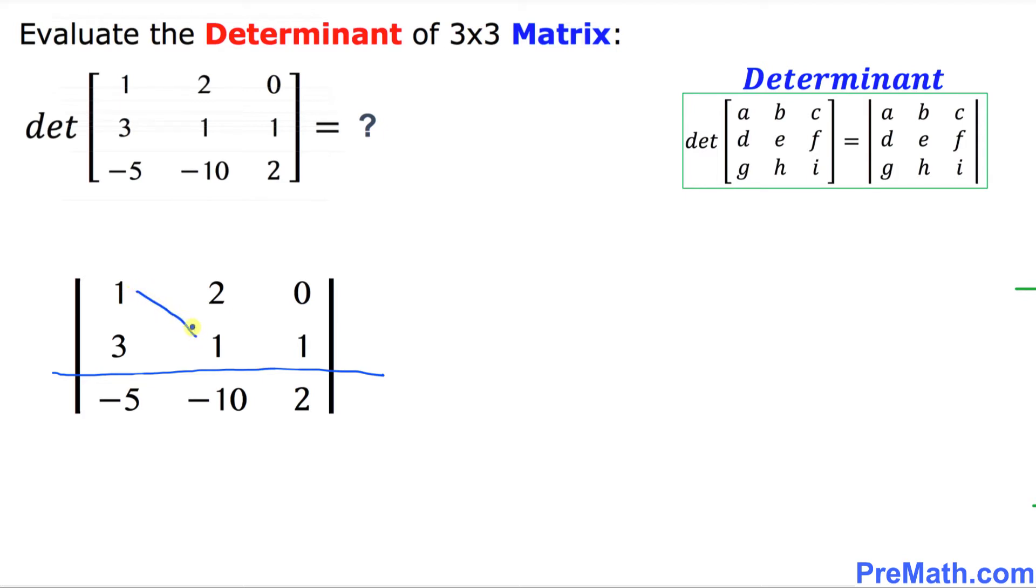We are going to cross multiply, crisscross. First I'm going to multiply this way. 1 times 1 is 1. Let's put down 1. Then always put a minus sign and we're going to multiply 3 times 2 is 6. 1 minus 6 is negative 5. So far so good. Whatever value we got we are going to put in the opposite direction underneath this number 2. I'm going to put down negative 5 over here.